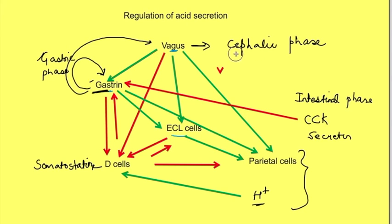So there are different phases of acid secretion which act via different mechanisms. There is cephalic phase which acts on thought, smell of food. There is a gastric phase which occurs when food enters into the stomach and when food enters into the duodenum there is intestinal phase.